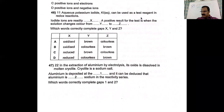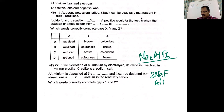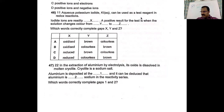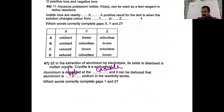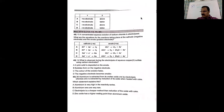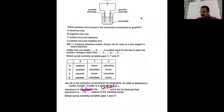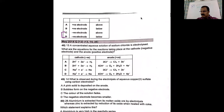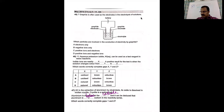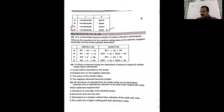Question 47: aluminum is extracted by electrolysis of its oxide dissolved in molten cryolite (Na₃AlF₆). Aluminum is deposited at the cathode. It can be deduced that aluminum is below sodium in the reactivity series. The first part: cathode is the negative electrode. The second part: aluminum is below sodium. So the correct choice is D — negative electrode and below sodium.